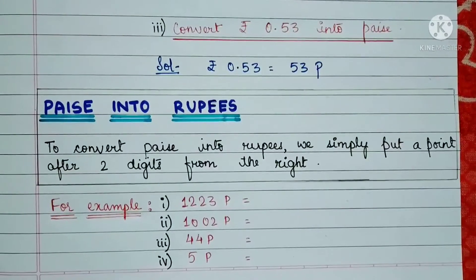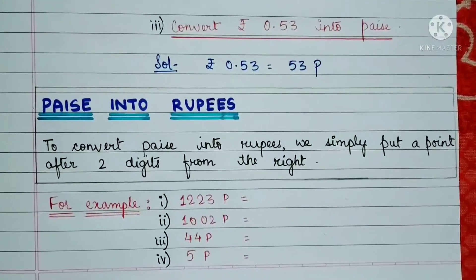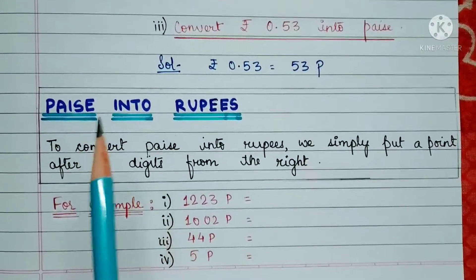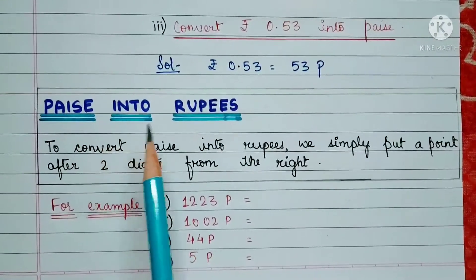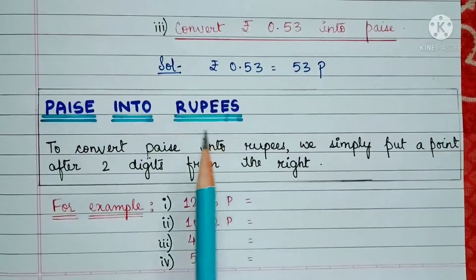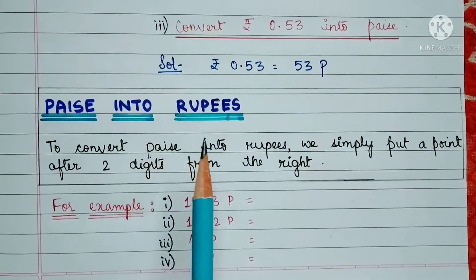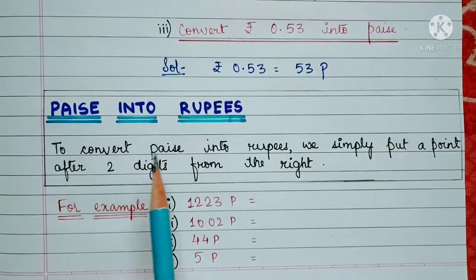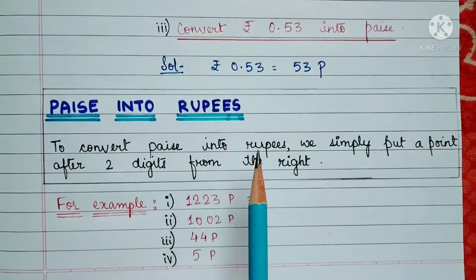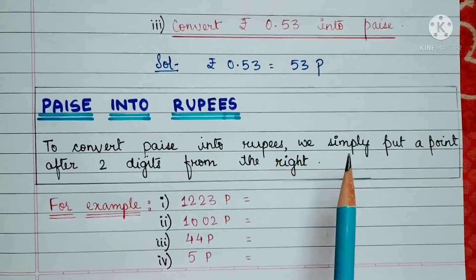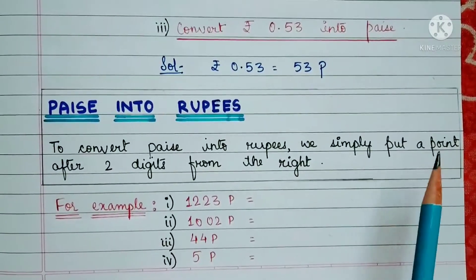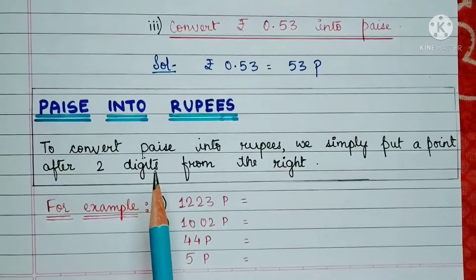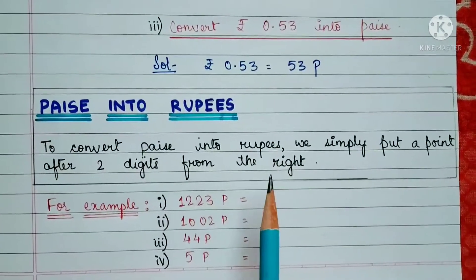Now let's discuss the conversion of paise into rupees. To convert paise into rupees, we simply put a point after 2 digits from the right.